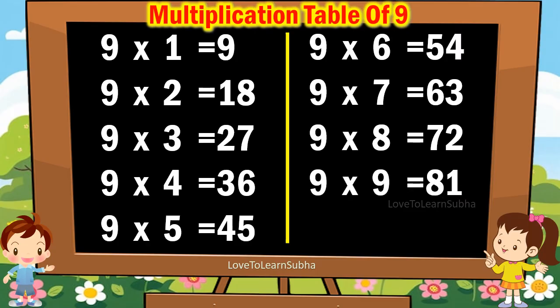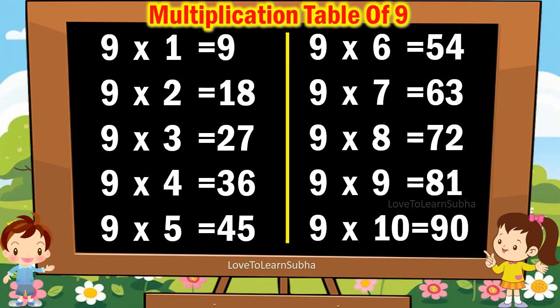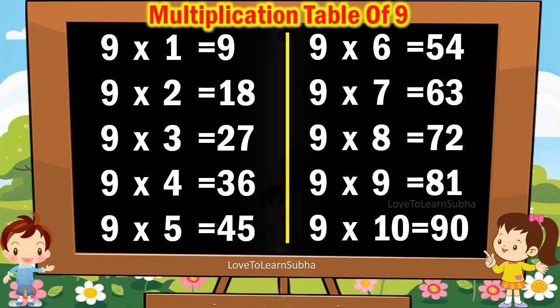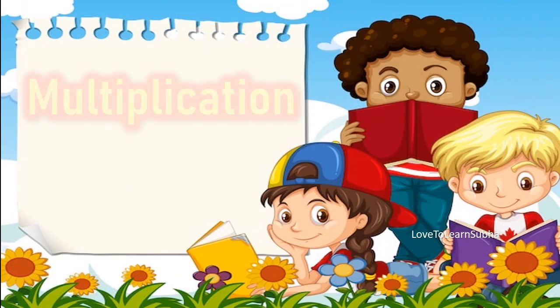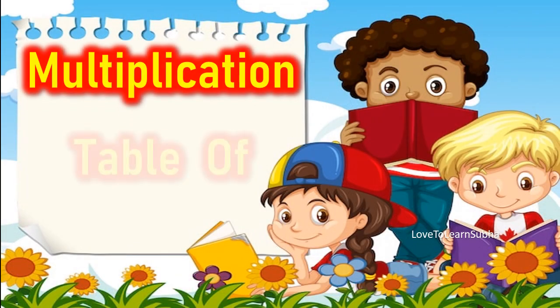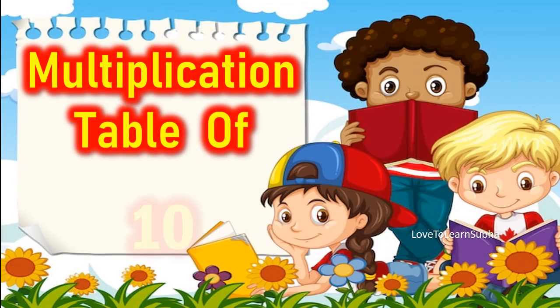9 9s are 81. 9 10s are 90. Multiplication table of 10.